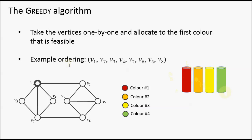First we select vertex 1 — any colour is available, so we assign it to the first colour, which is red, and the vertex is also dropped into the red bucket. Next we consider vertex 7; we can't assign it to red because it's adjacent to vertex 1, so we assign it to the second colour, which is orange. Now we consider vertex 3 — it's adjacent to red and orange, so we assign it to the third colour, yellow. Similarly for vertex 4, we assign that yellow too.